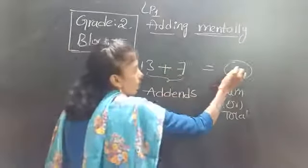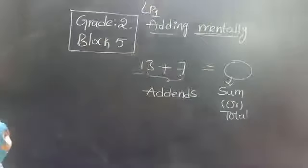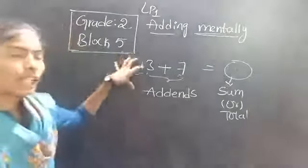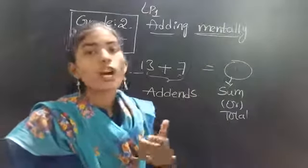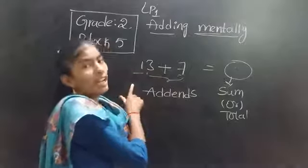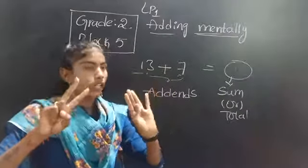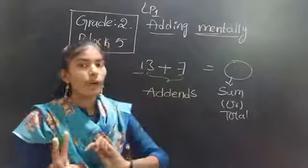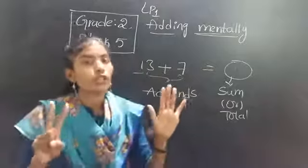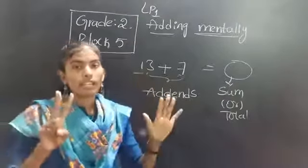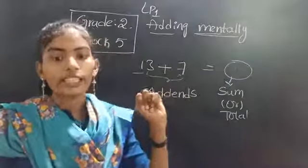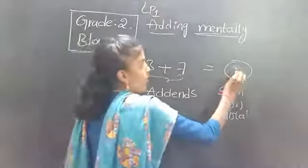So 13 plus 7 — how can you find the sum without using any method? We have to solve this problem in our mind only. You have to take the big number in your mind and use the small number on your fingers, then count forward as many times as that number. So 13 is the big number — keep 13 in your mind and take 7 fingers. From 13, count forward: 14, 15, 16, 17, 18, 19, 20. So which number did we reach? 20.